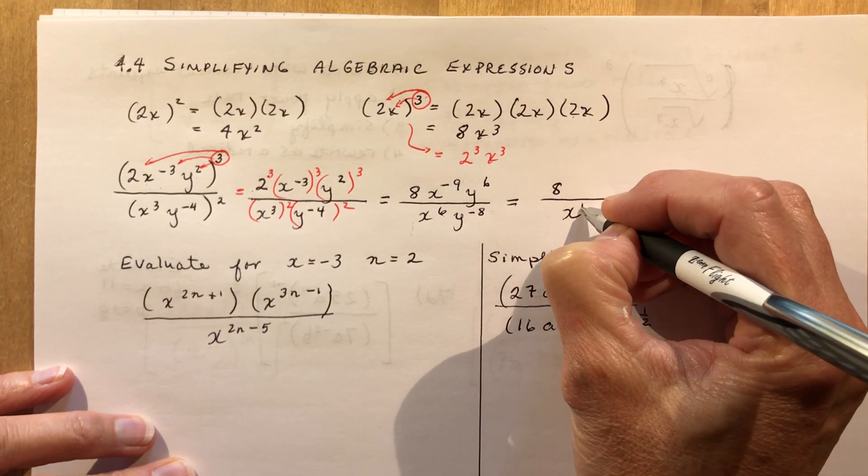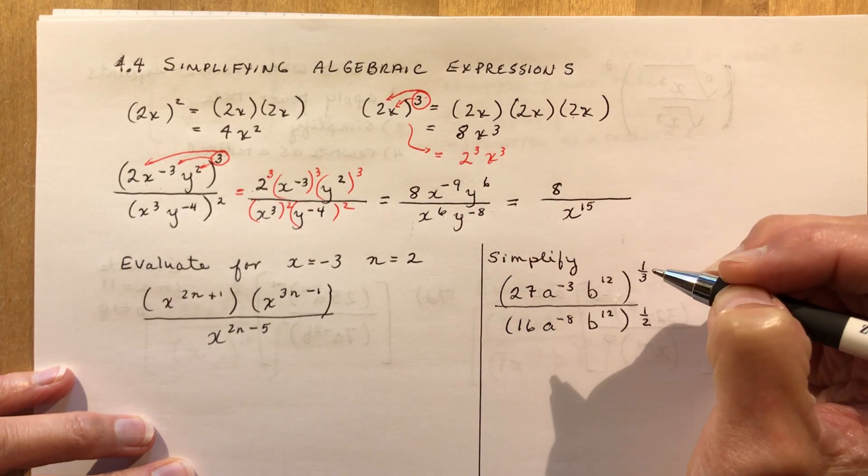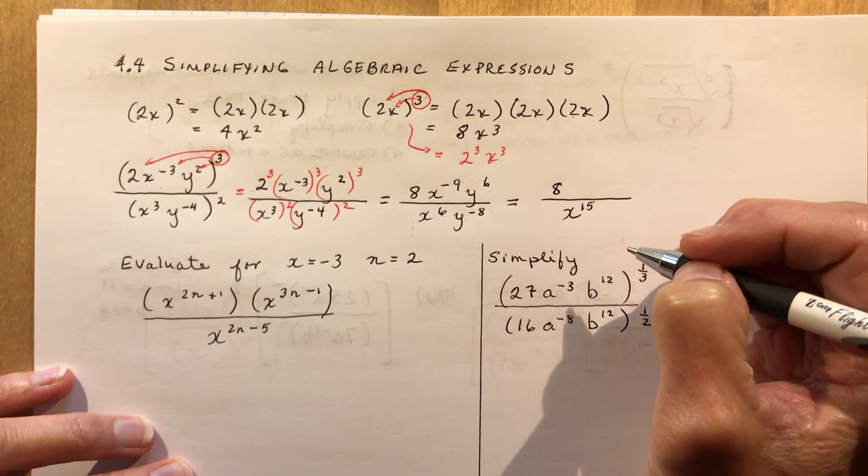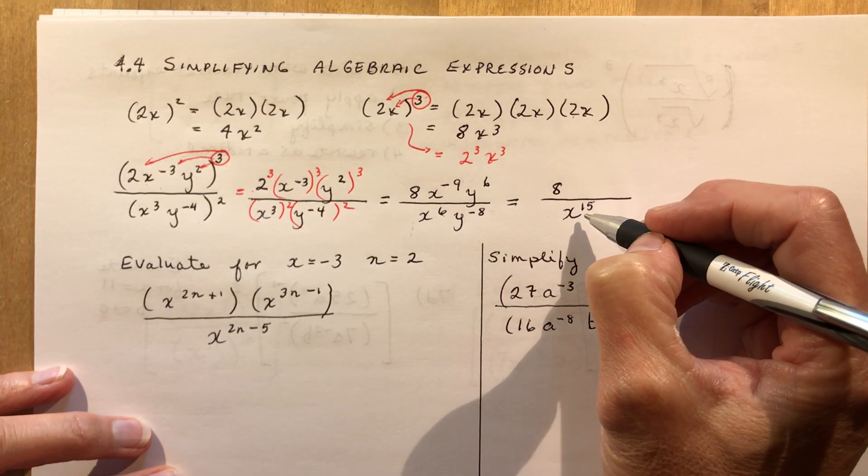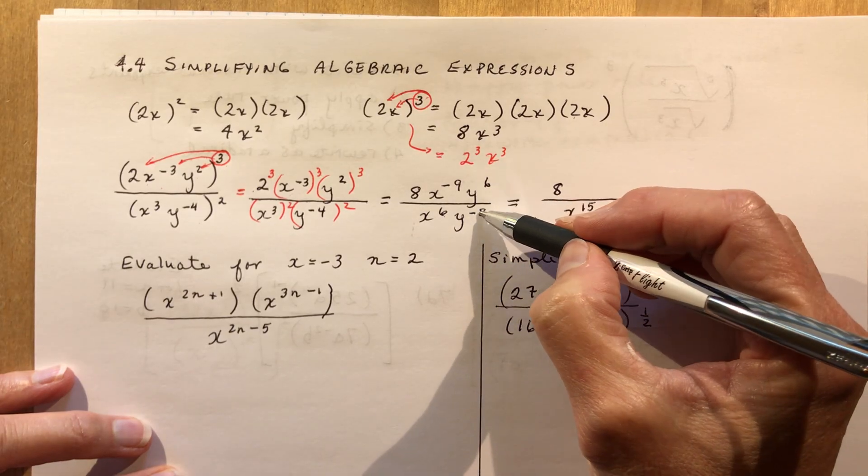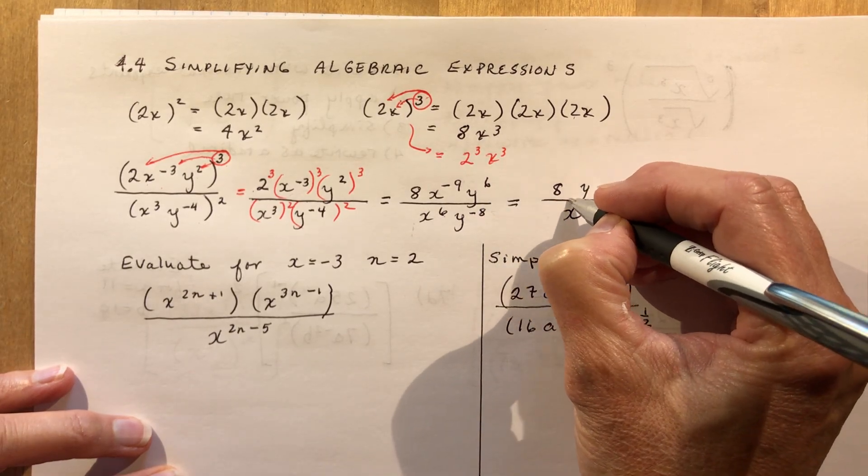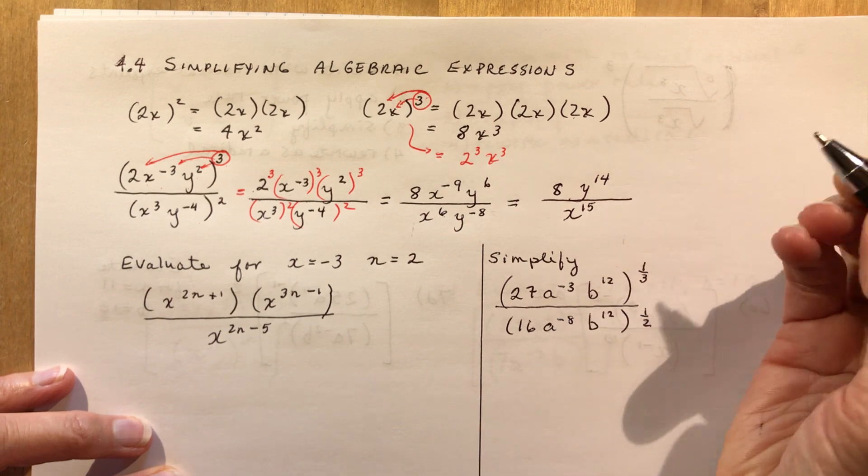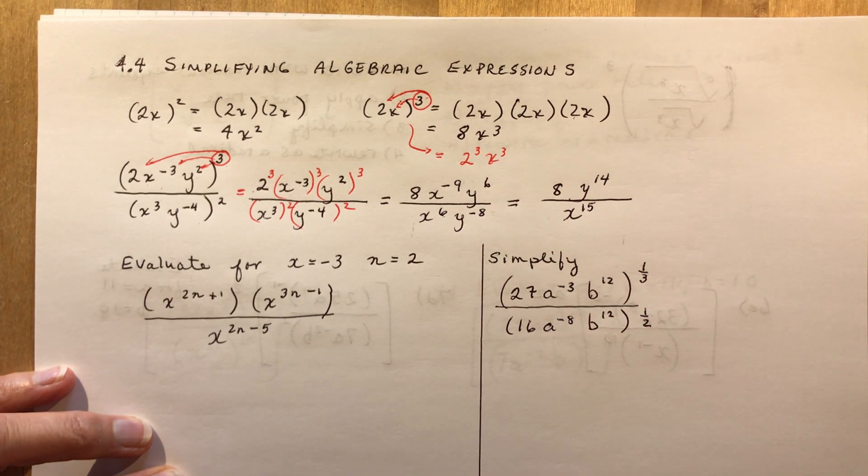If I want a positive exponent, I have to put it in the denominator. I always tell my students if your exponents are bad, put them in the basement, they become good. See, change signs. And this is 6 minus minus 8, that would be to the power of 14. So that's how you would do that little basic one, and that is simplifying and making sure that you got rid of the exponents.